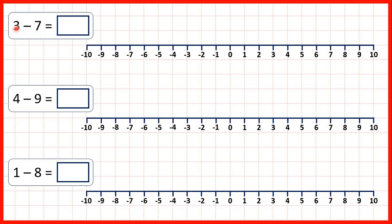So first, we have three minus seven. On our number line, we can start at three. And then, to subtract seven, we can count back one, two, three, four, five, six, seven. So, because we've got to minus four, that's our answer.